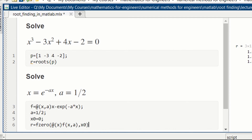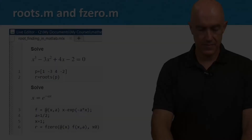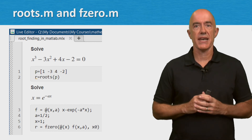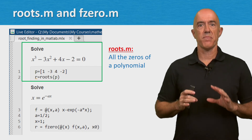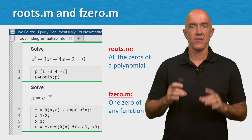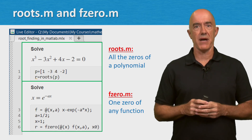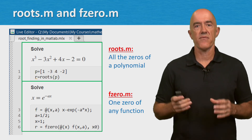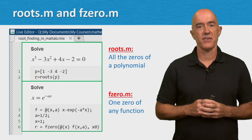We go to the live editor and hit run. We see that r equals 0.7035. In this video, I've introduced you to two root finding functions: roots and fzero. Roots is used to find all the zeros of a polynomial, and fzero is used to find one zero of any nonlinear function. I personally have used fzero many times in my research — it's a very powerful and simple function to use. I'm Jeff Chasnov. Thanks for watching and I'll see you in the next video.